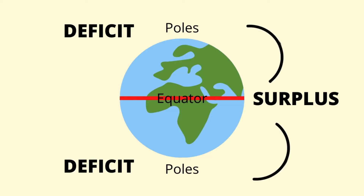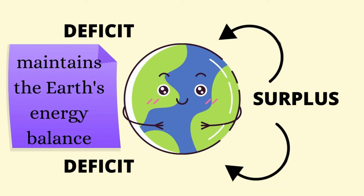In other words, winds and ocean currents are transferring this energy from places of surplus in our equatorial regions to areas of deficit in our polar regions. This transfer of heat maintains the Earth's energy balance.